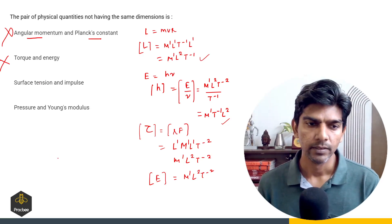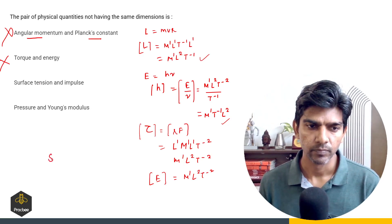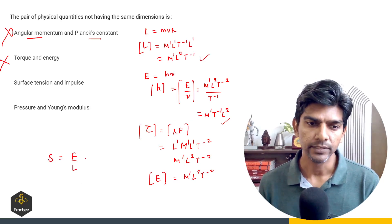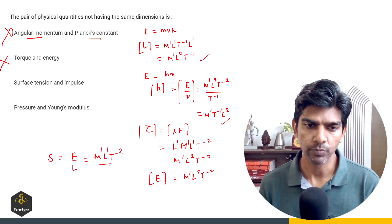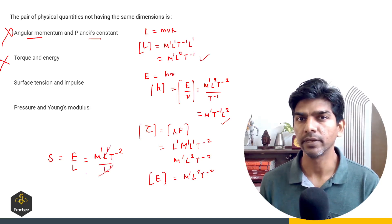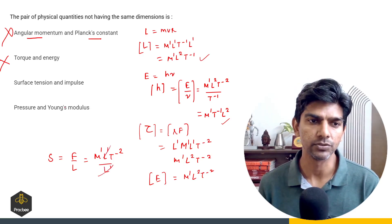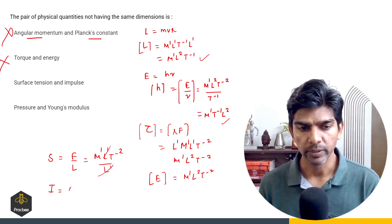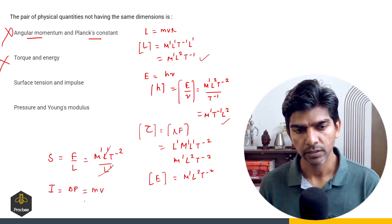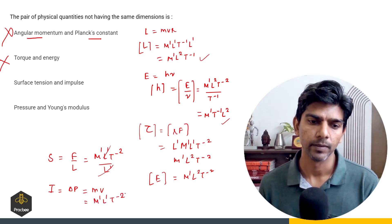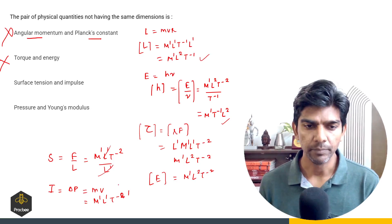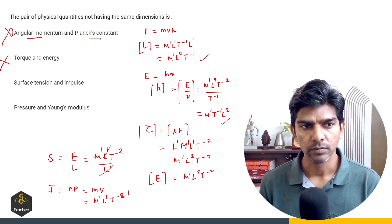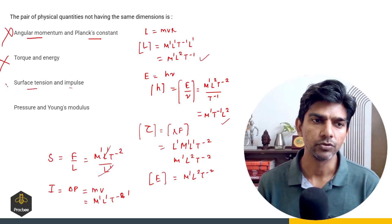Surface tension and impulse: surface tension is force per unit length, so M raised to power 1, L raised to power 1, T raised to power minus 2 upon L raised to power 1, giving M raised to power 1, T raised to power minus 2. Impulse is change in momentum, which is M·v, giving M raised to power 1, L raised to power 1, T raised to power minus 1. Comparing, the dimensions of surface tension and impulse are different, so this is the answer.